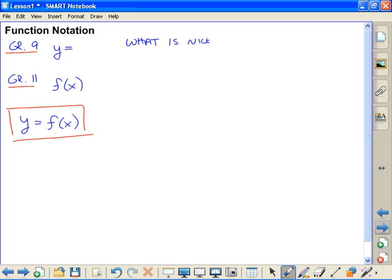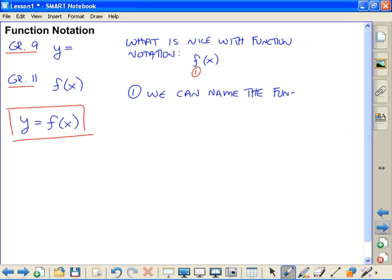So what is nice with function notation. The advantages, so for f of x, the first thing, number 1, we can name the function. So the example there, we could have an f of x function, and let's say we're working with two other functions. I'll just call them g and m. And now it's easier to name. Whereas before, in grade 9, or prior, we'd have y equals, y equals, y equals. How do you tell them apart? Well, some of us taught you to maybe put a subscript in. Subscript's kind of annoying. So we're using the f, g, and m, much, much easier notation to keep track of.